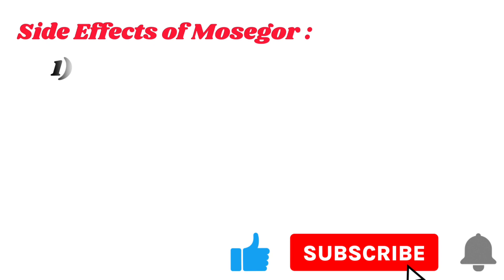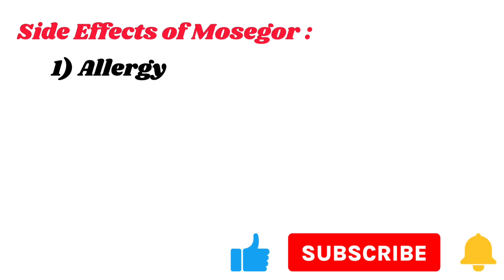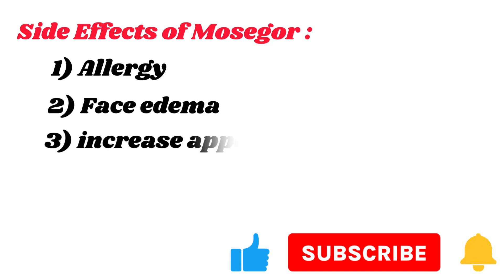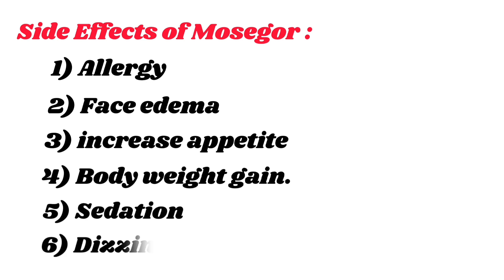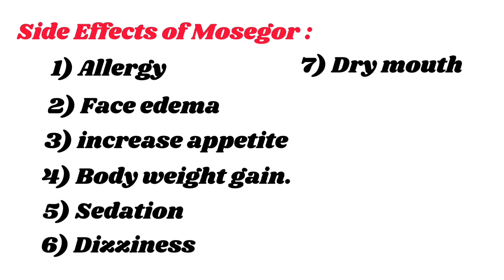Side effects of Mosegor syrup or tablets: 1. Allergy. 2. Face edema. 3. Increased appetite. 4. Body weight gain. 5. Sedation. 6. Dizziness. 7. Dry mouth. 8. Fatigue.